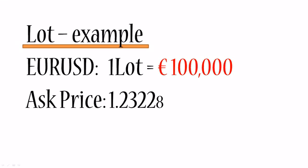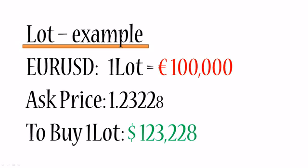The ask price with your broker is currently 1.23228, and that means that in order to buy one lot of EUR/USD, you need 123,228 American dollars on your account.